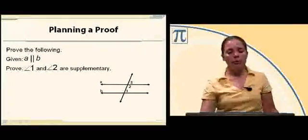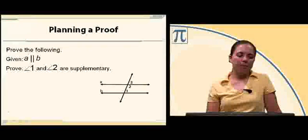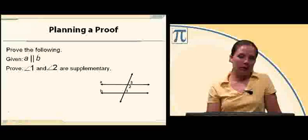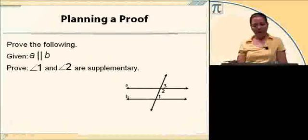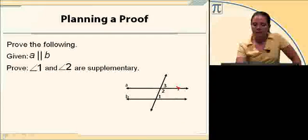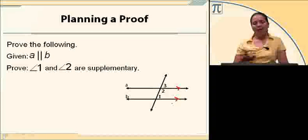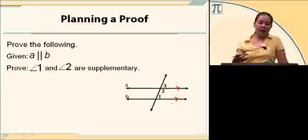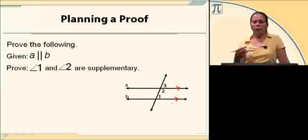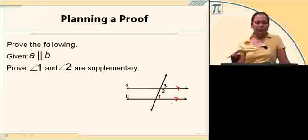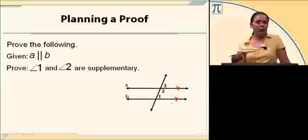We're going to prove that — given line A is parallel to line B — angle one and angle two are supplementary. We know that A and B are parallel. If A and B are parallel, then we can say that one and three are congruent because they're corresponding angles. I also know that two and three are supplementary because they form a linear pair. So if one and three are congruent and two and three are supplementary, then one and two must also be supplementary.